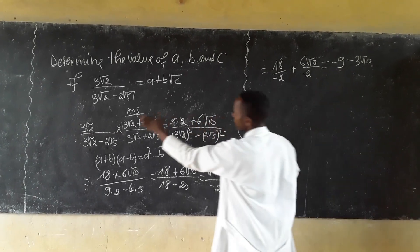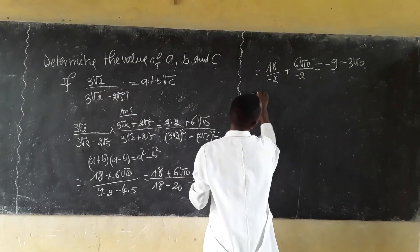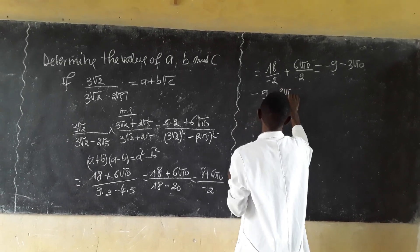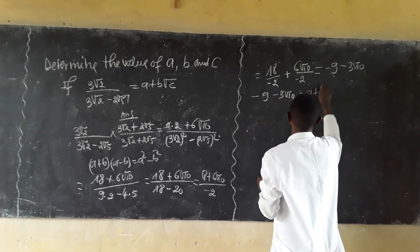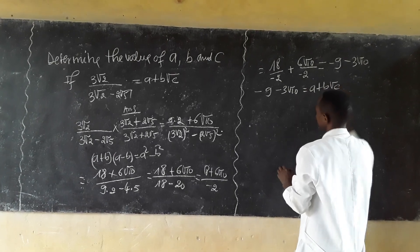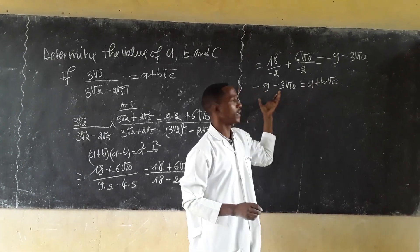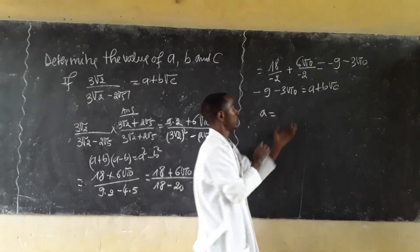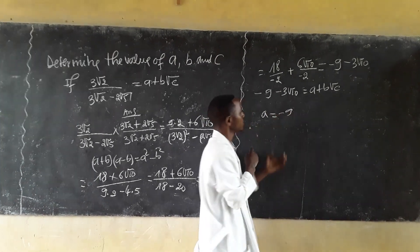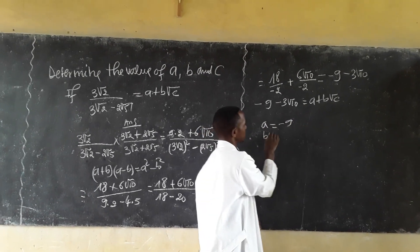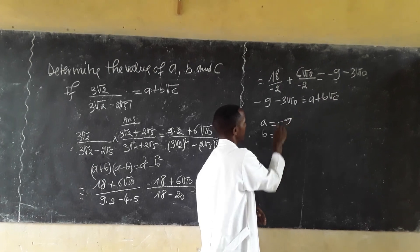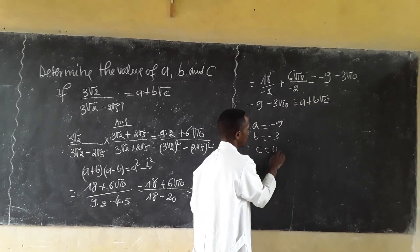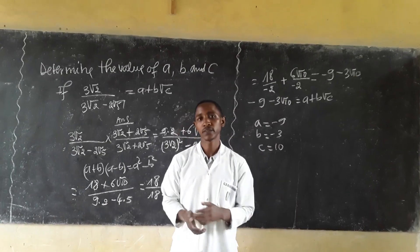So this is equal to minus 9 minus 3√10, which equals A plus B√C. Comparing both sides: A is minus 9, B is minus 3, and C is equal to 10.